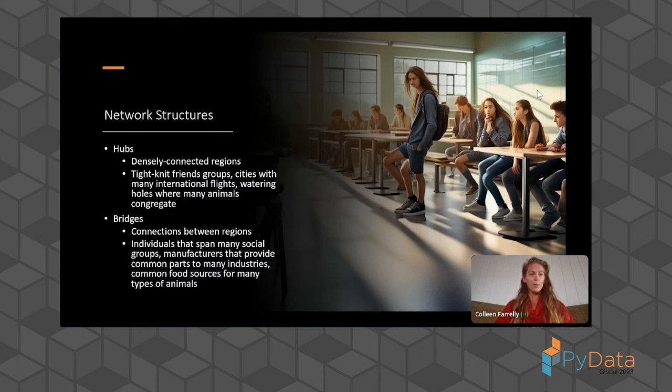There are a couple important structures that networks have that are really interesting for us to analyze and important to the overall functioning of the network. Hubs are densely connected regions. So we can think of groups of friends who all know each other or all frequent the same locations, cities that have many international flights connecting them to other cities, or watering holes where many animals congregate. Hubs generally are very dense, and there are regions where there can be a lot of very quick spread of ideas or diseases or behaviors. Bridges, by contrast, may not be densely connected regions, but they're connections between different regions. So an individual may span many different social groups and connect those groups together. Manufacturers may provide common parts that are used in a lot of different industries to tie together a supply chain. And common food sources might exist for many types of animals, such as bait balls in the ocean.